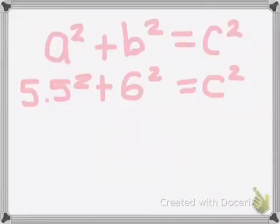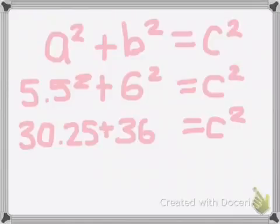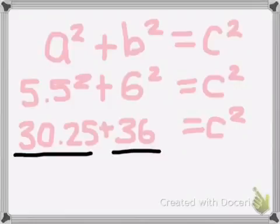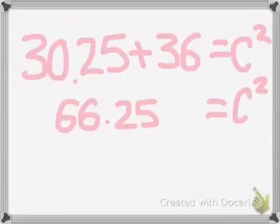Taking the measurements from the triangle, you substitute them for a and b. 5.5 squared is 30.25 and 6 squared is 36. 30.25 plus 36 equals 66.25.